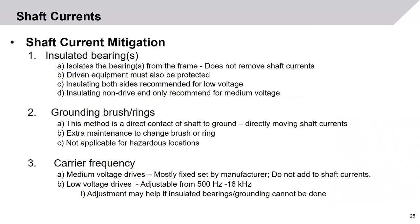To mitigate shaft currents, the first step is insulated bearings. Insulated bearings isolate the bearing from the frame; however, they do not actually remove the shaft current — it will still be there, so the driven equipment must also be protected. In low voltage motors, insulating both sides of the bearings is recommended. However, in the medium voltage world, only insulating the non-drive end is recommended.